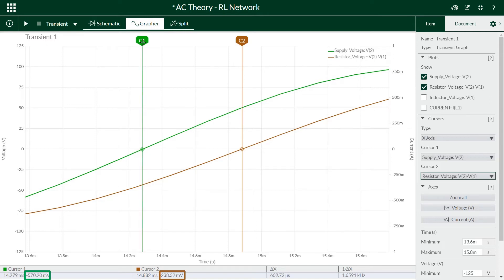We can then make a note of the time difference delta X on the bottom of the screen there in yellow, so that we can calculate the phase difference.